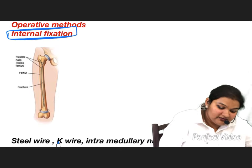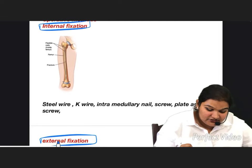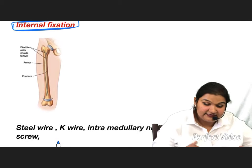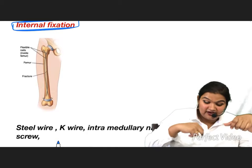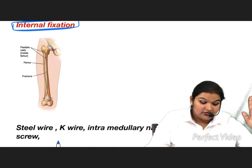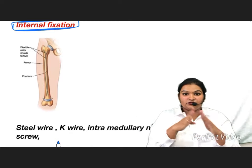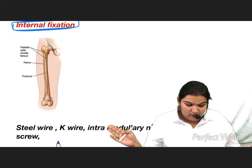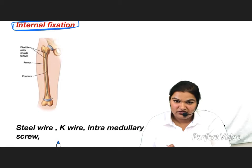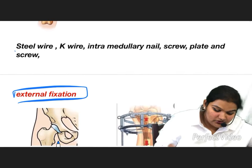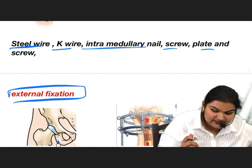Operative methods of immobilization include internal fixation and external fixation. In internal fixation — as seen with minimally invasive surgery — a small incision is made and steel wire or K-wire is placed inside. The fixating material has no or minimal communication with the external environment. Materials used include steel wires, K-wires, intramedullary nails, screws, and plates.